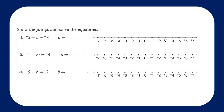Show the jumps and solve the equation. For question number 1, we're going to start at the integer positive 5. We want to land at positive 3. This requires us to move to the left 2 spaces — 1, 2. Going to the left is decreasing by 2 spaces, so we are adding a negative 2.